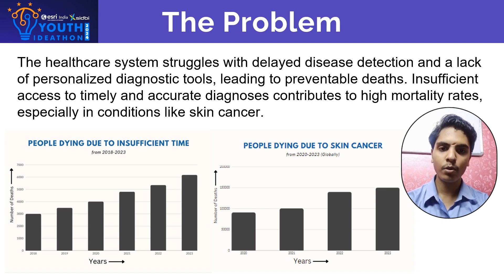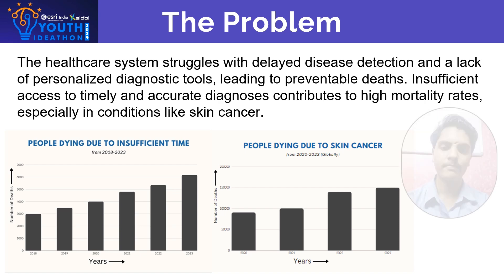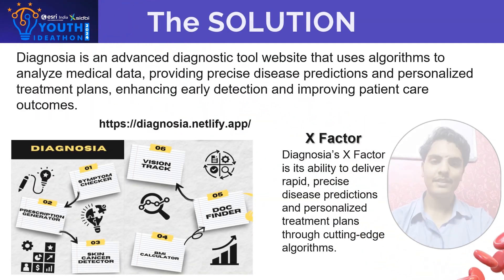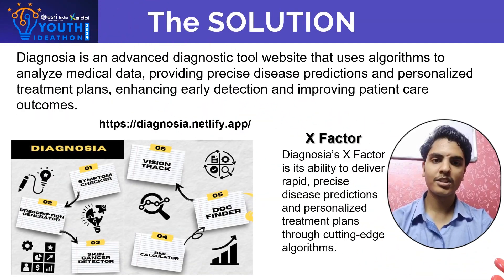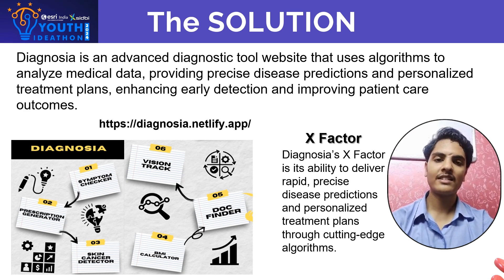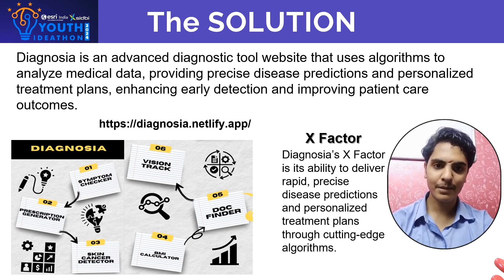There are two graphs showing the increasing number of deaths in the last four years. The solution to this problem is an advanced website called Diagnosia, consisting of mainly six features, starting with the symptom checker.